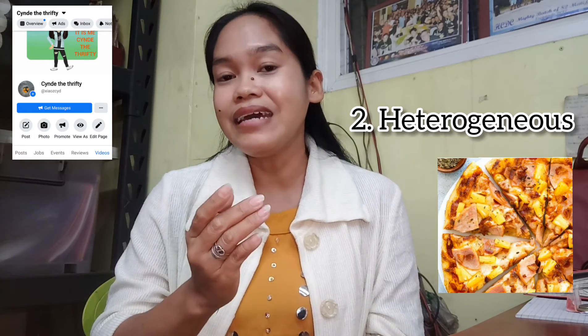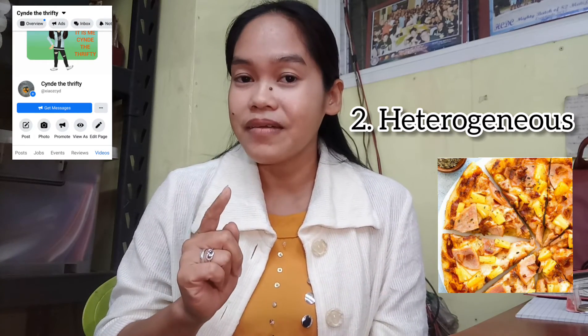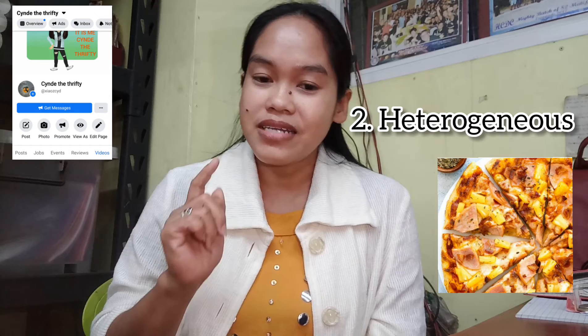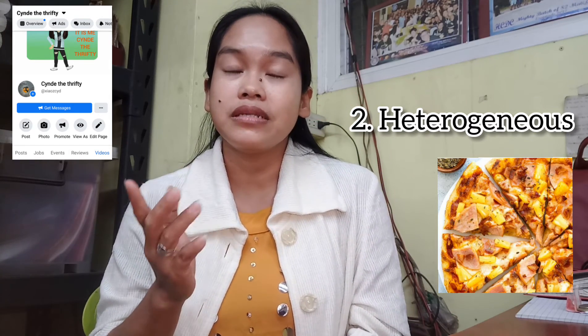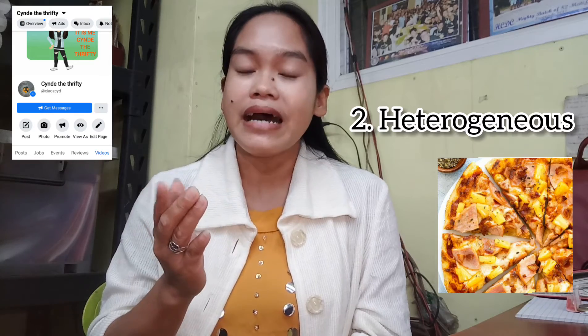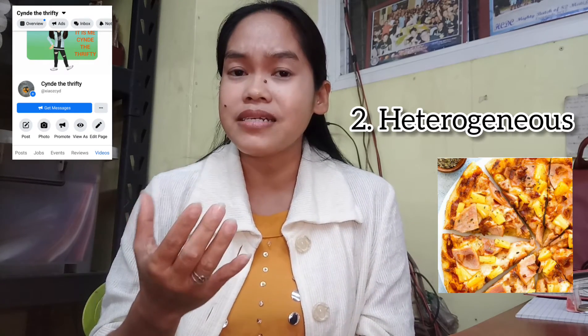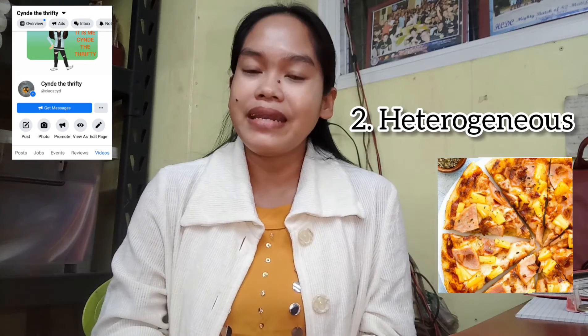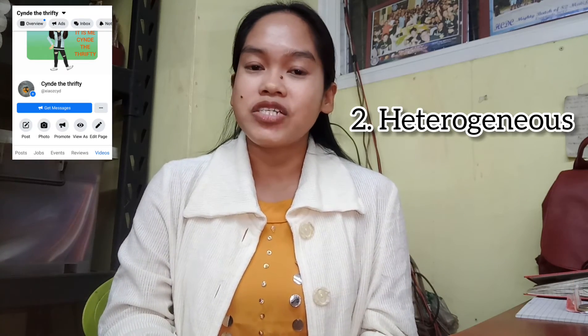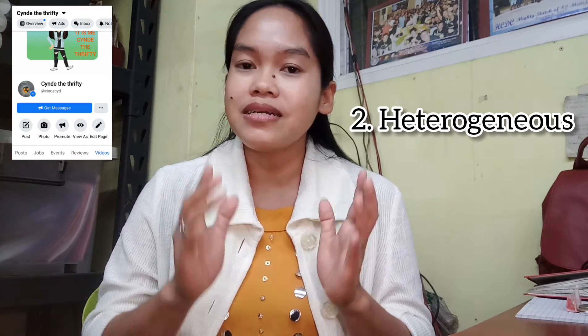Another example of a heterogeneous mixture is pizza. When you look at a pizza, you can still see there is hotdog, there is cheese, there is onion, there is pineapple — you can still identify each component. That is because it is a heterogeneous mixture, so you can see its particles and still identify each one even though they are mixed together.